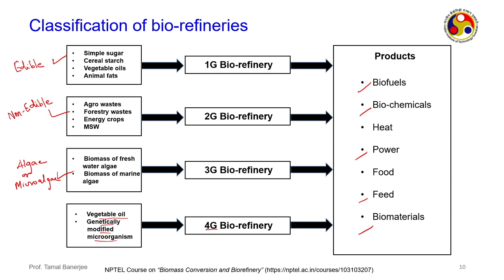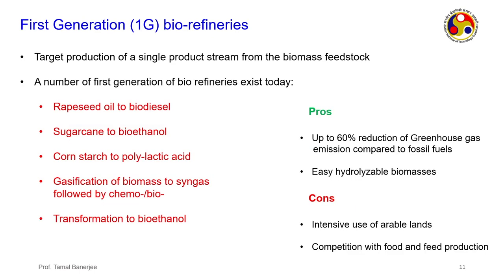The 4G fuel we will not discuss in much detail, but let us take up the 1G, 2G, and 3G concepts in the next few slides. First generation bio-refineries target the production of a single product stream from the bio-refinery biomass feedstock. Many already exist: rapeseed oil to biodiesel; sugarcane to bio-ethanol; cornstarch to PLA; or gasification of biomass to syngas. Syngas — a mixture of CO and H2 — from biomass, followed by chemical and bio-transformation to bio-ethanol.